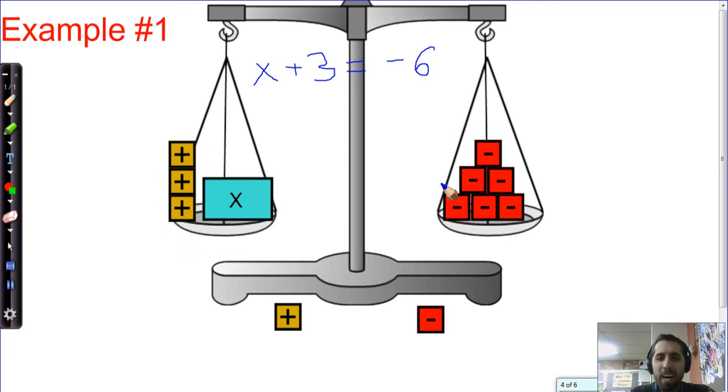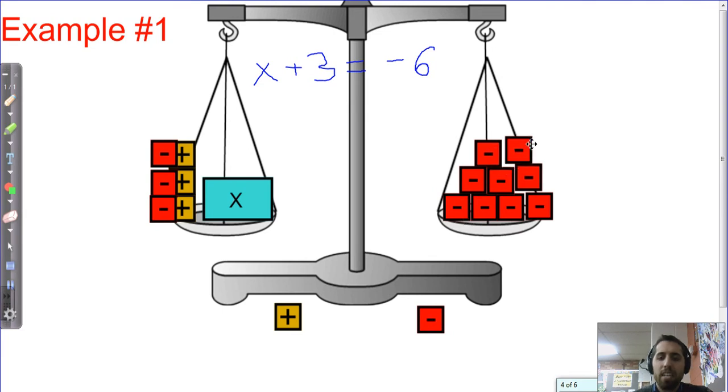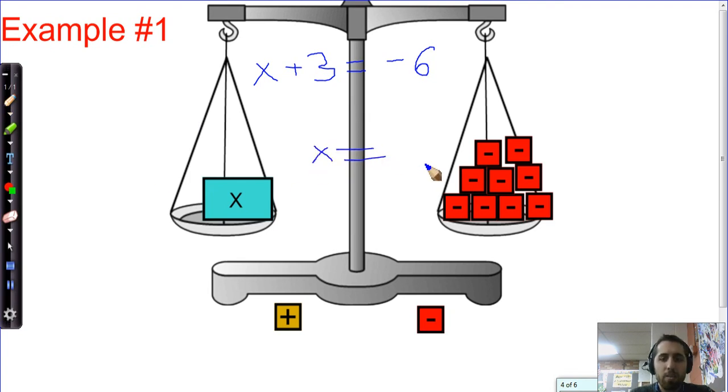So I wonder how zero pairs could help us. What we could do is say, if I know that if we put three negatives with these three positives, the scales would tip. They would no longer be balanced because I'm adding something to one of the sides. But if I put three more tiles on the right side too, then it would stay balanced because we added three negative tiles and three negative tiles. If you add the same value or amount to both sides, or if you subtract the same value or amount from both sides, then it should stay balanced. We know that these would all cancel out because they're zero pairs. In this case we would have x is equal to negative 9.